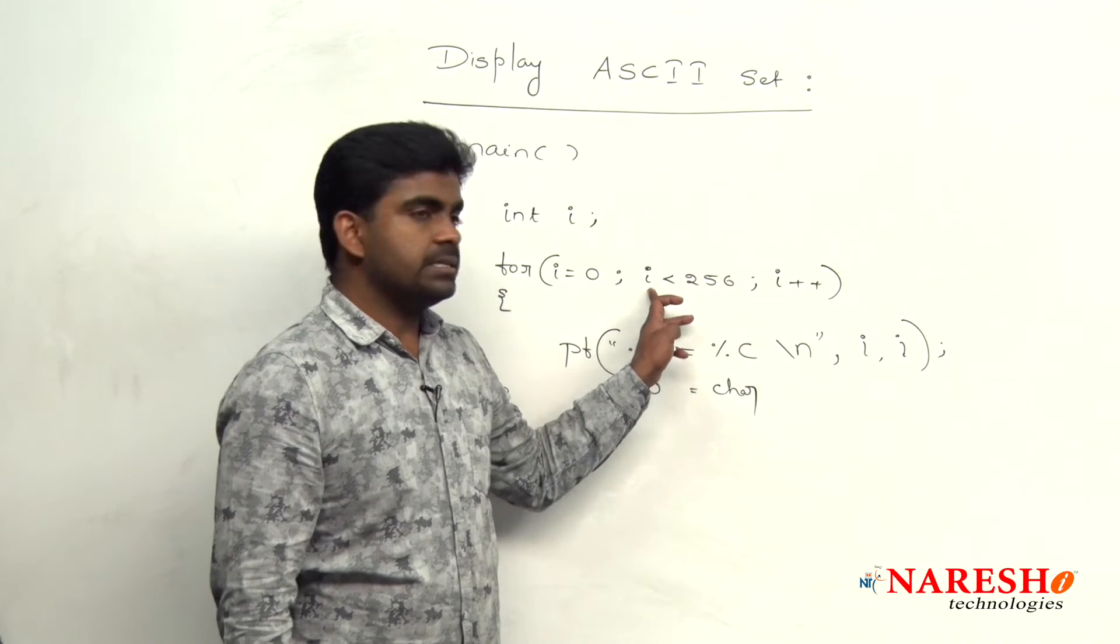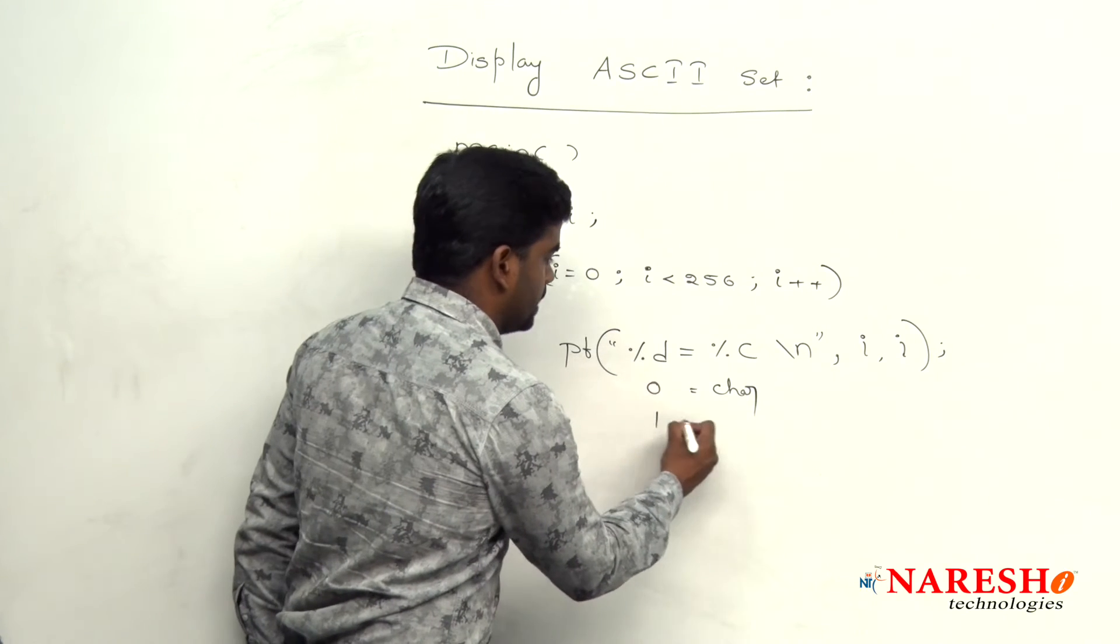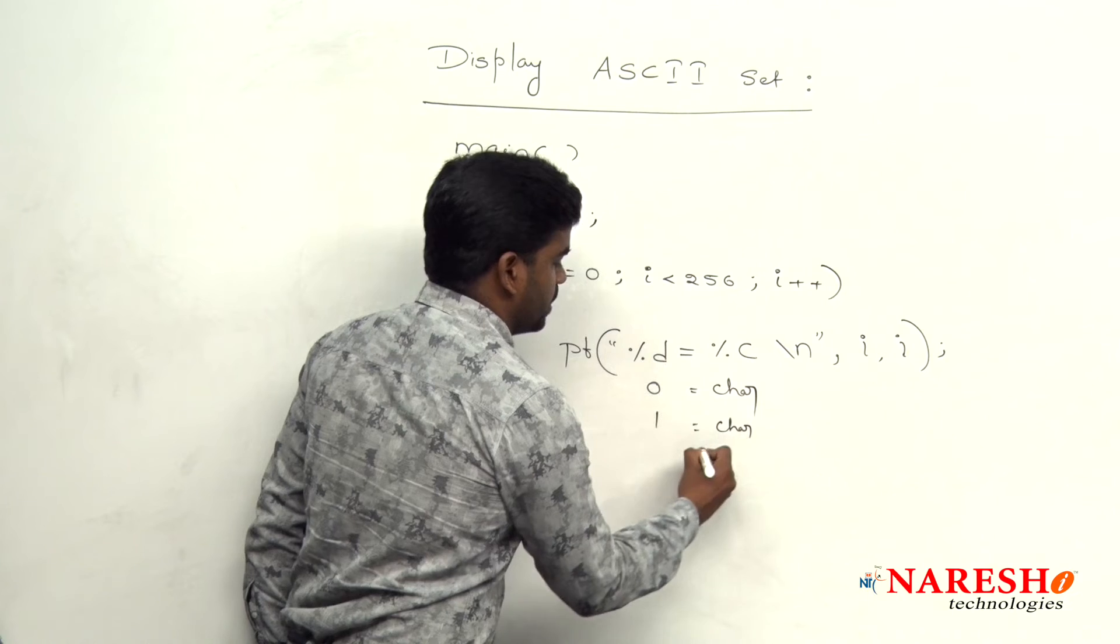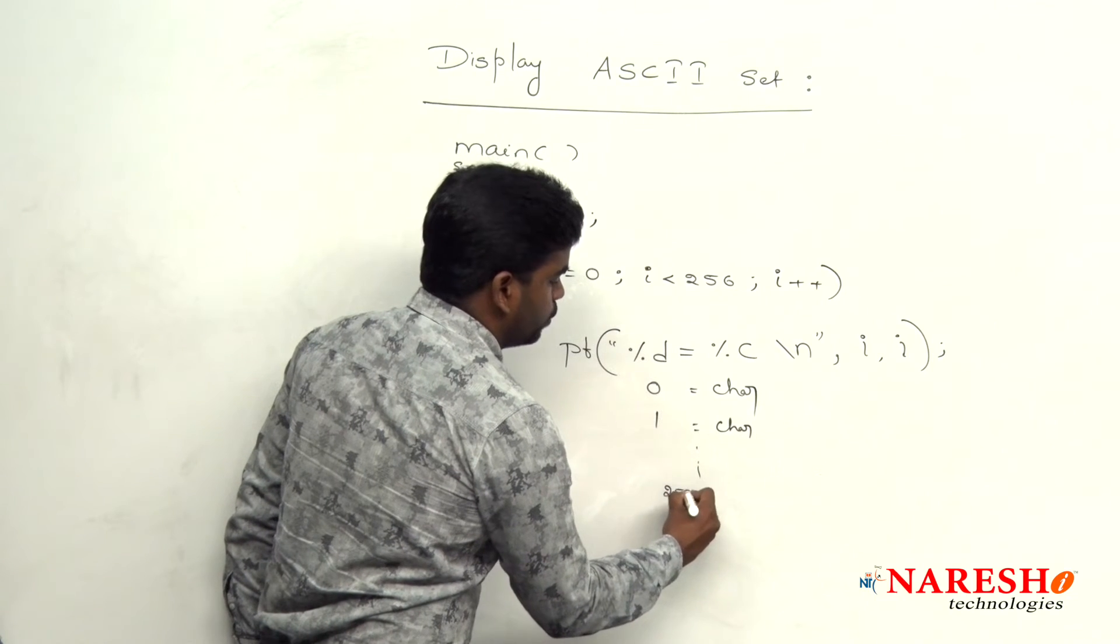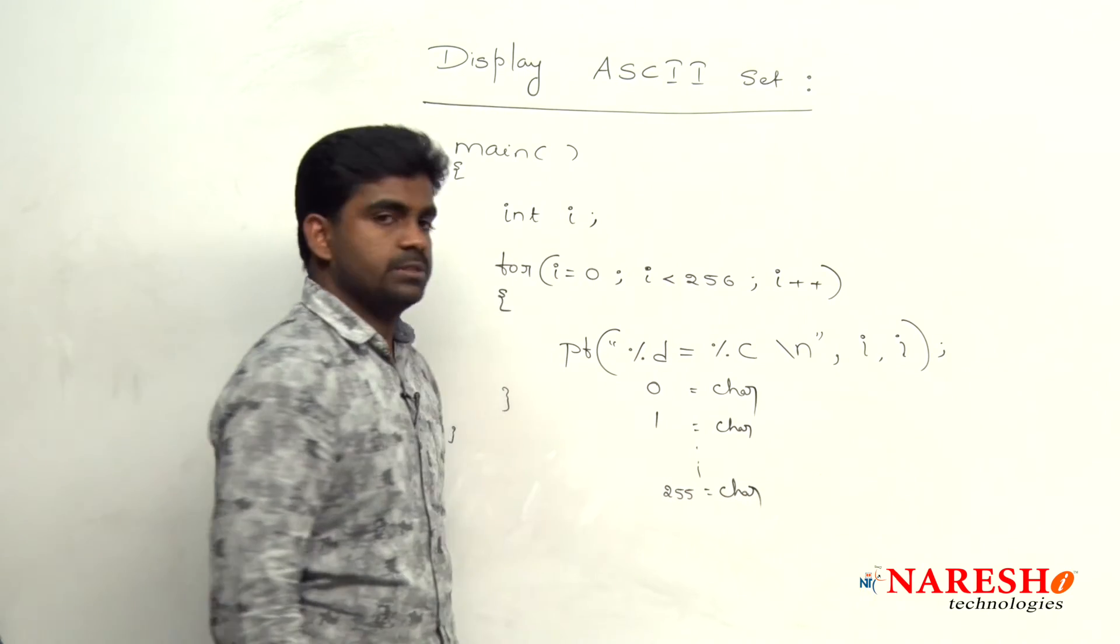i value become 1, 1 is less than 256, 1 corresponding character and so on up to 255, all the characters it will display.